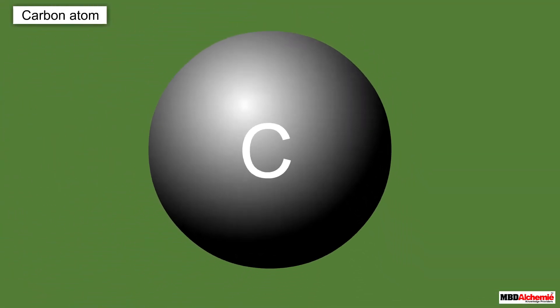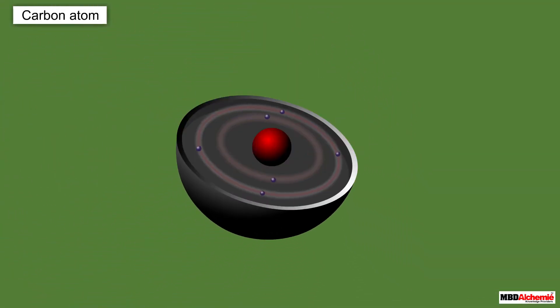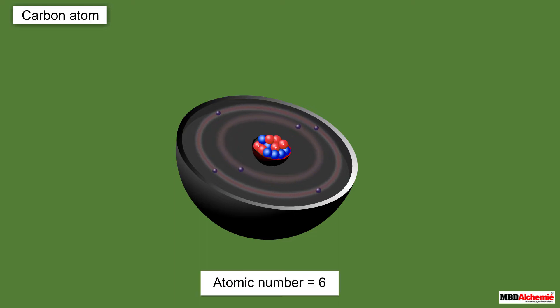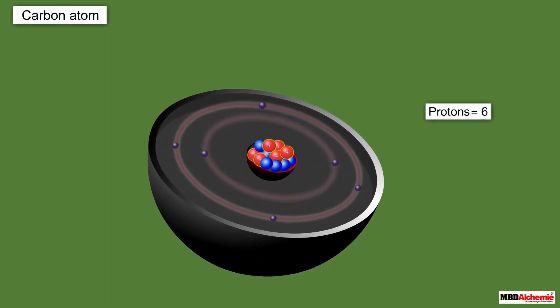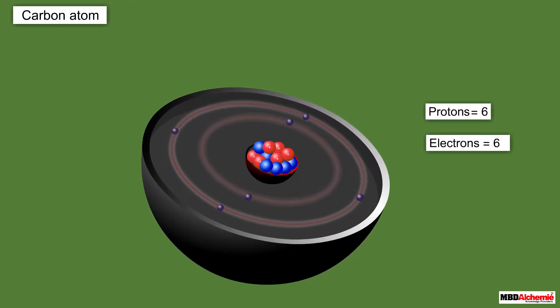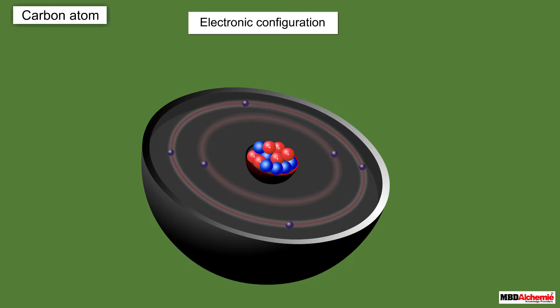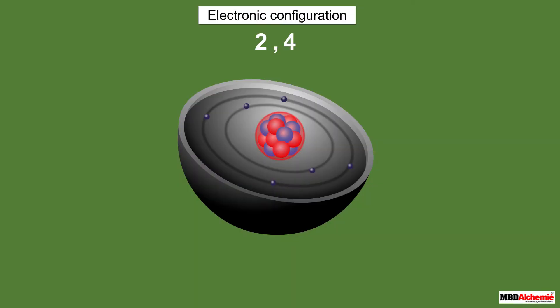Let us now see how a carbon atom actually forms bonds with other atoms. The atomic number of carbon is six, so a carbon atom has six protons and six electrons, and its electronic configuration is 2, 4. Looking at this electronic configuration, we can say that it has four valence electrons, and thus its combining capacity or valency is four.